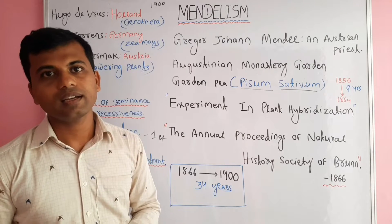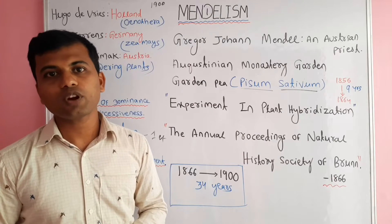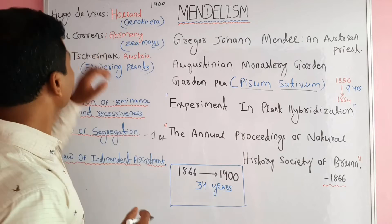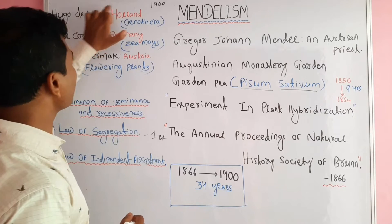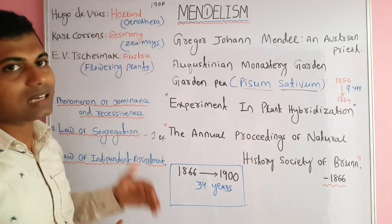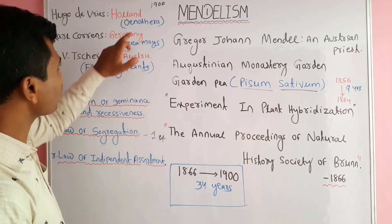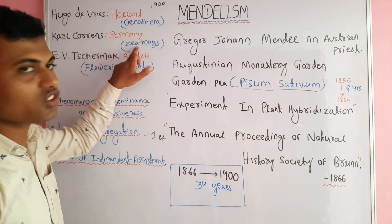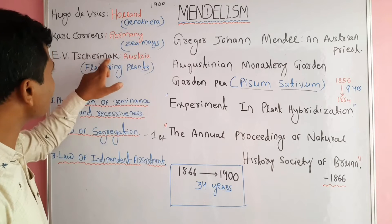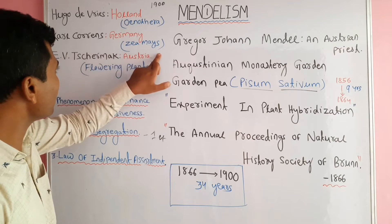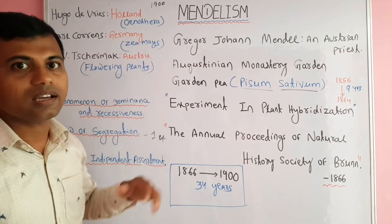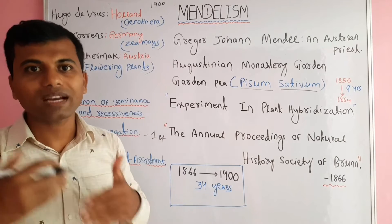In the year 1900, three scientists from different corners of the world rediscovered Mendel's works: Hugo de Vries from Holland worked on Oenothera, Carl Correns from Germany worked on maize, and Erich von Tschermak from Austria worked on flowering plants.